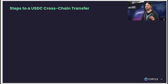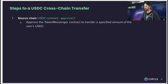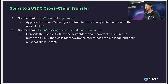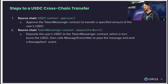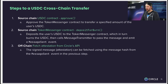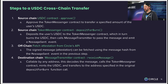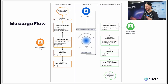So let's walk through the steps for a USDC cross-chain transfer. First, approve the token messenger contract to transfer USDC. Second, execute the deposit-for-burn function, which deposits the user's USDC to the token messenger contract, burns the USDC, and calls the message transmitter to pass the message and emit an event. Third, fetch the attestation from Circle's API — the message can be fetched using the message hash from the message sent event from step two. Finally, call the receive message function on the message transmitter contract on the destination chain to receive USDC at the originally specified address. This is a high-level diagram showing how all the smart contracts interact.